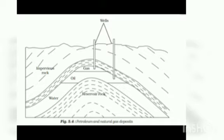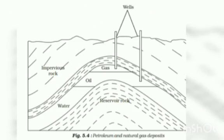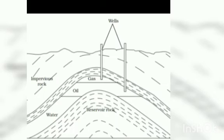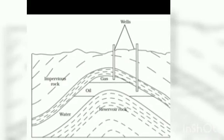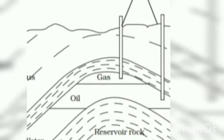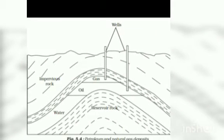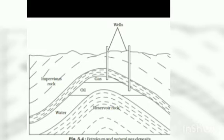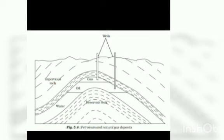So students, look at this picture. It shows deposits of petroleum. Here you can see the reservoir rocks and here the water. This is oil, the petroleum in the form of oil, and this is the gas. It shows the deposits of petroleum and natural gas. You see layers containing the petroleum oil, the oil layer and the gas layer above that and the water.